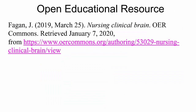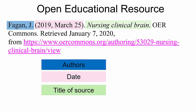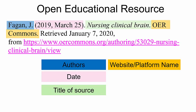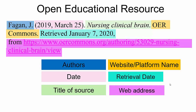Now let's look at an OER or open educational resource. The author is in the same format, the date is in the same format, so is the title of the source and the name of the web platform. After the name of the web platform, you must include the words 'retrieved' and the date that you examined the web page — in this example, January 7th, 2020 — followed by the word 'from' and then the web address as a live link with no period.